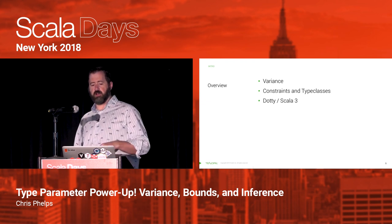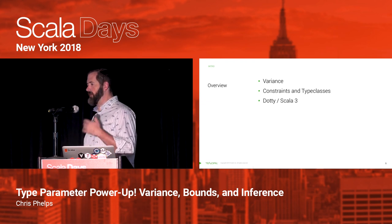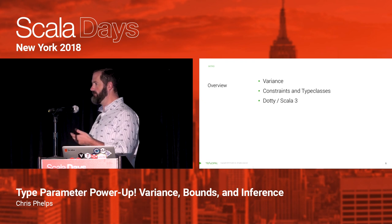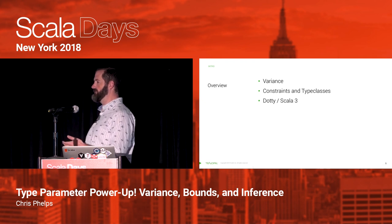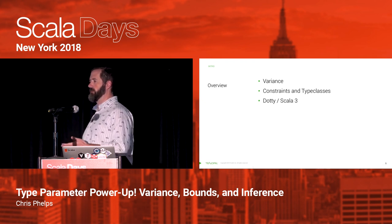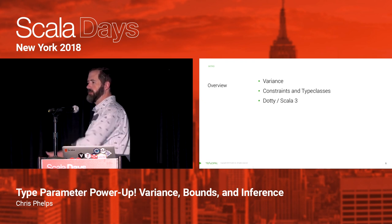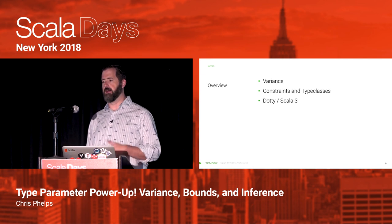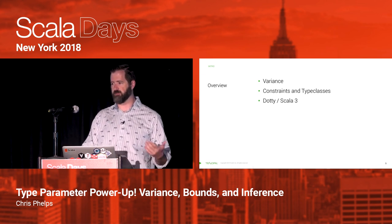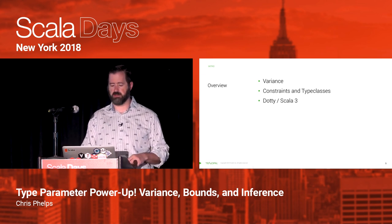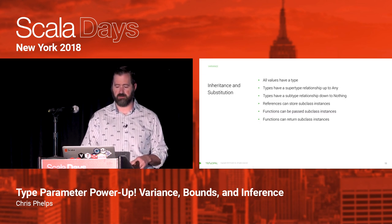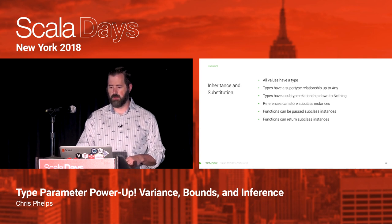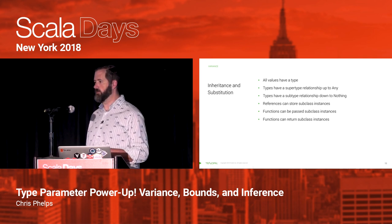So the overall structure: I'm going to talk about variance first. We'll move from there into constraints. We'll see how constraints then get us to type classes. And then at the end, we'll discuss really briefly how these things change in Dotty and Scala 3. So let's get started with variance, and we'll start from the basics.